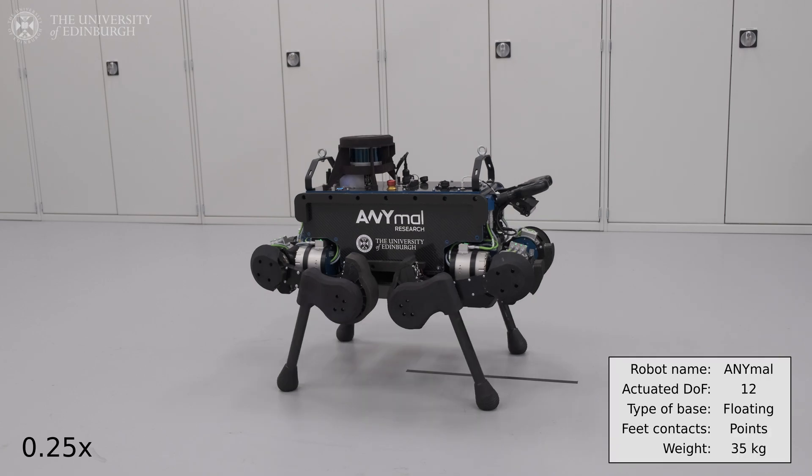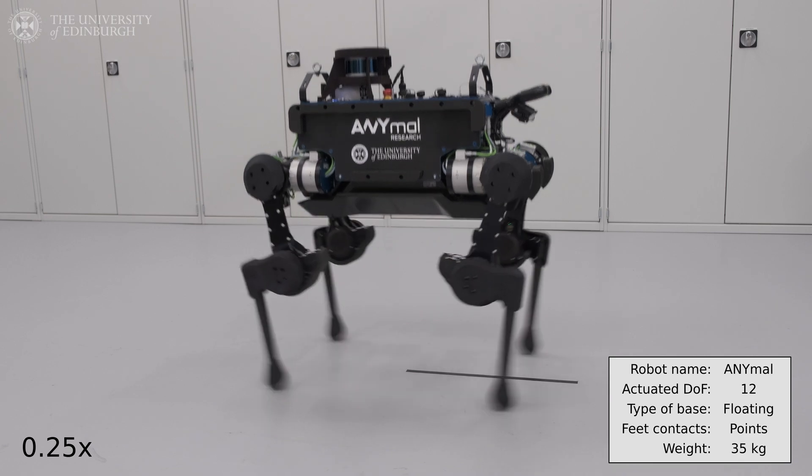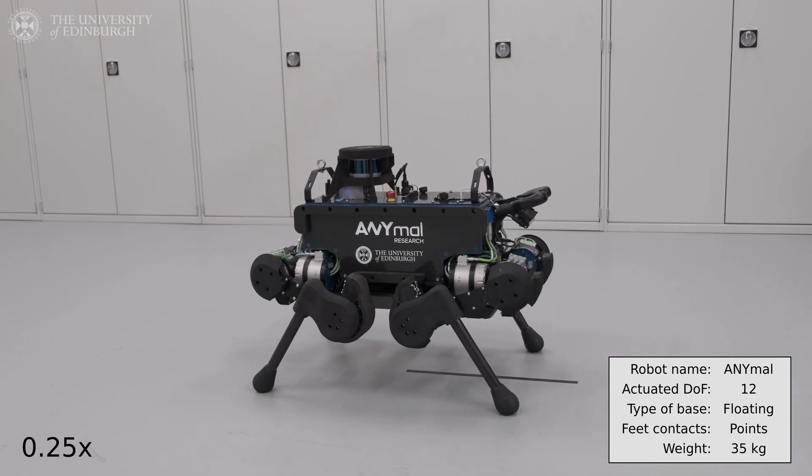The motion was planned offline and then played back on the robot. Our joint level PD controller feed forwards the optimal planned torques to each joint, and uses the position and velocity references as feedback.